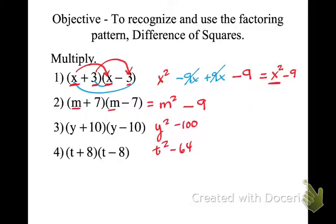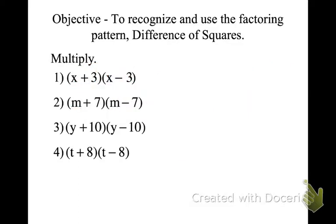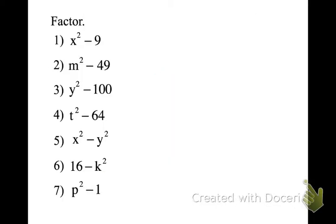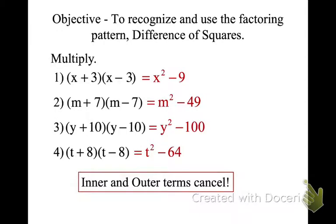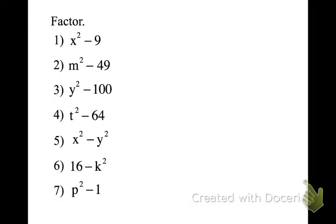The only time you multiply binomial by binomial that you get two terms, another binomial, is when you have this difference of squares pattern. Other than that, anytime we multiply a binomial times a binomial, we will get at least a trinomial. What is happening here is our inner and outer terms are getting canceled out.